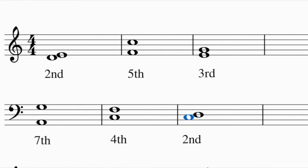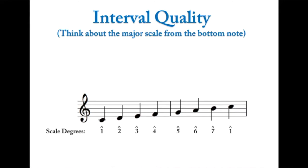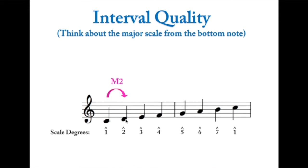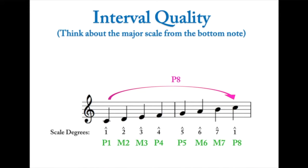Now that we have the size, let's look at defining the quality - major, perfect, or minor. To do this we use the major scale. If you take the C major scale and look at any note above the tonic, each of those intervals are called major or perfect intervals. Starting on C: up to scale degree two is a major second, scale degree three is a major third, then a perfect fourth, perfect fifth, major sixth, major seventh, and a perfect octave.